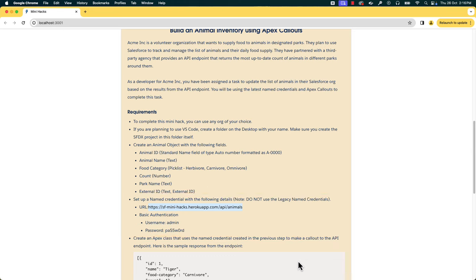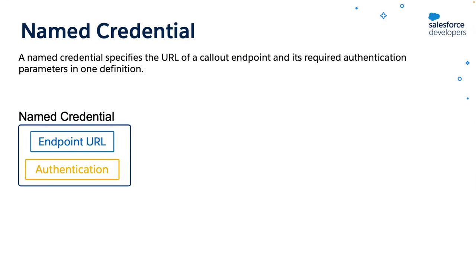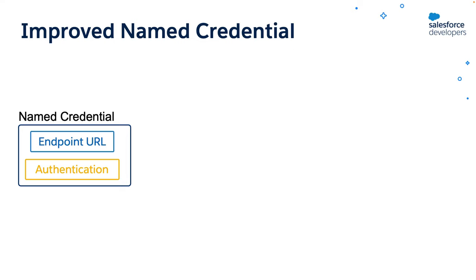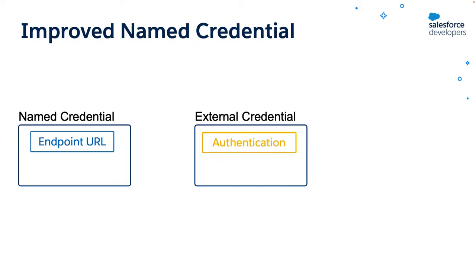One other requirement in the hack is to use the new improved named credentials to store the endpoint URL and authentication. So let's see how the new named credentials work. A named credential specifies the URL of a callout endpoint and its required authentication parameters in one definition. You can skip remote site settings when you use named credentials. With the Winter '23 release, Salesforce introduced improved named credentials that are extensible and customizable. Now endpoint URL and authentication are separated from the callout definition, and there are many advantages to this separation. Named credentials make callouts easier to maintain — for example, if an endpoint URL changes, you update only the named credential, and all callouts that reference it continue to work.